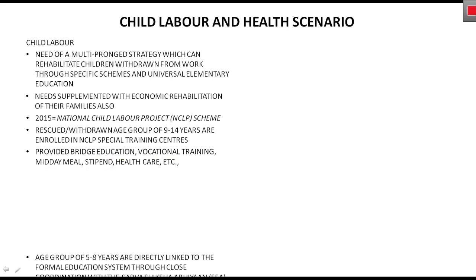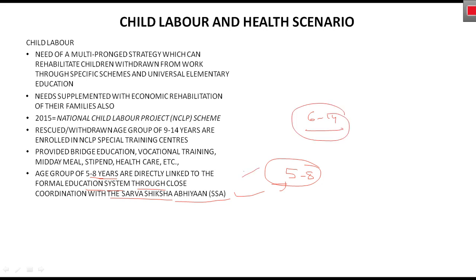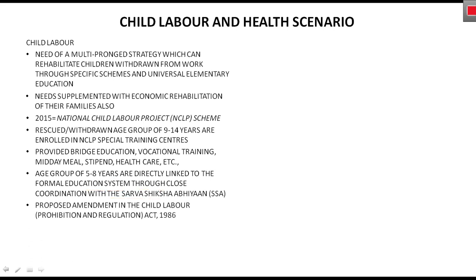9-14 age group के लिए यह scheme है। लेकिन 5 से 8 साल वाले बच्चे अगर rescue किए जाते हैं तो उनको directly formal education से link कर दिया जाता है, क्योंकि इस age में बच्चे formally join करते ही हैं। यह Sarva Shiksha Abhiyan के through होता है, जहाँ 6 से 14 साल के बच्चों को free education दी जाती है।